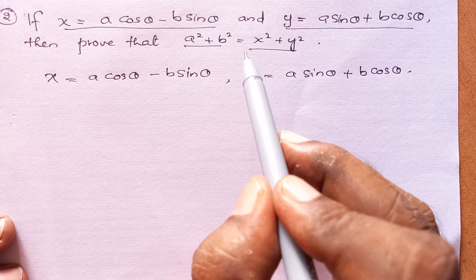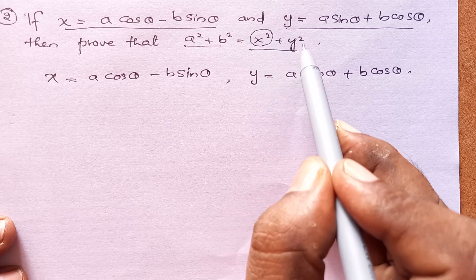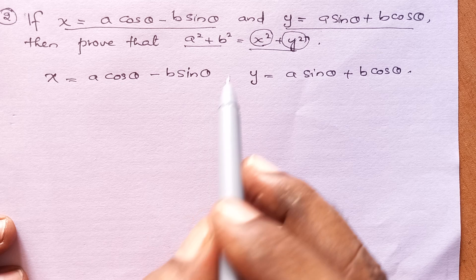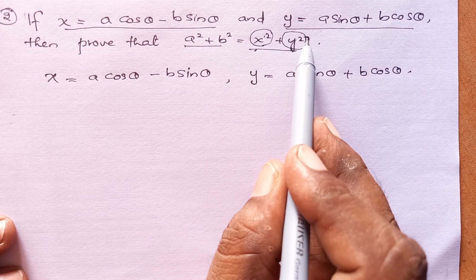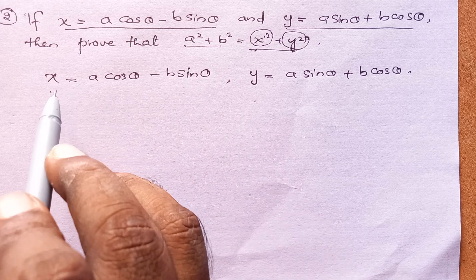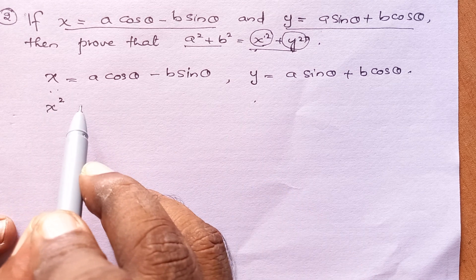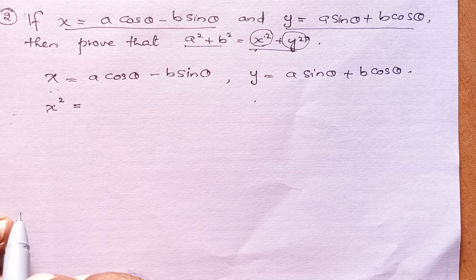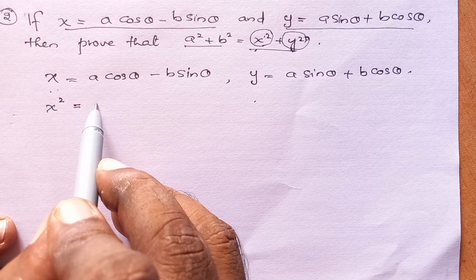When you look at what we need to prove, we need x square plus y square. We have x and y, so what we need to do is find x square and also y square. So let's see what x square is.